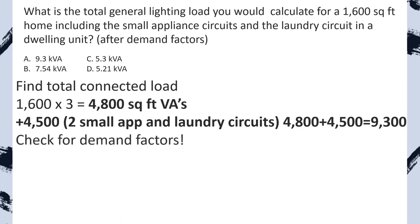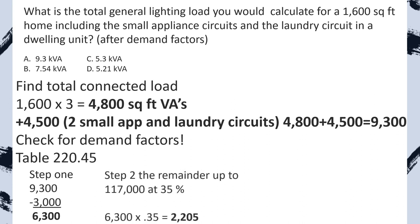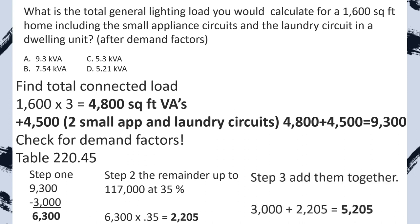Now we check for demand factors. We head over to table 220.45, and step one, we're going to set 3,000 to the side because we take 3,000 at 100%. In step two, we're going to take that remainder and multiply it by 0.35. Then we total those two back together, and we select D. Great job.